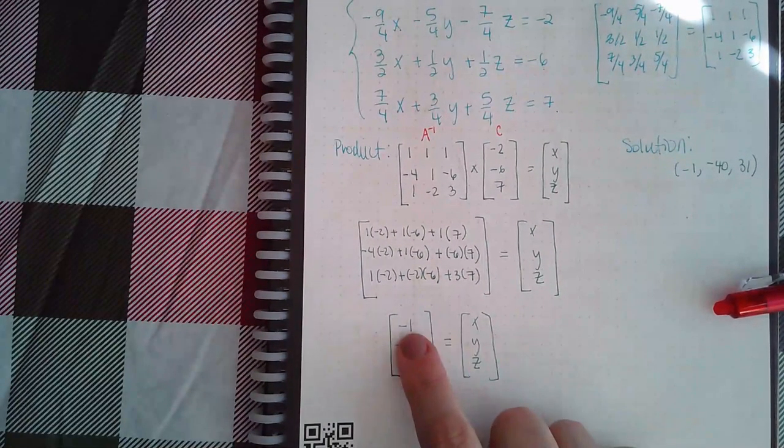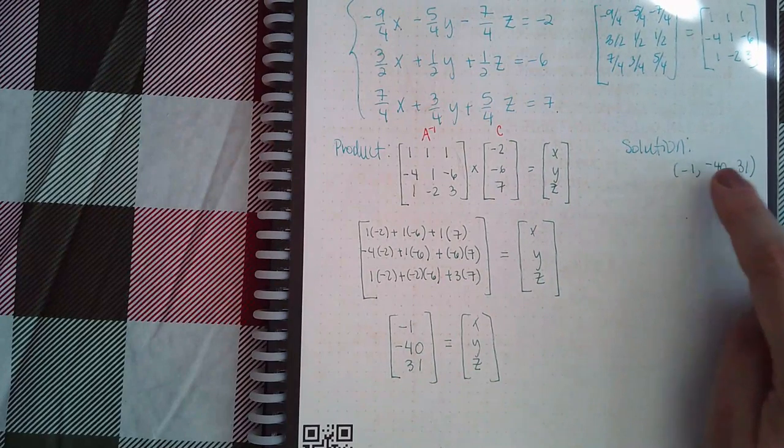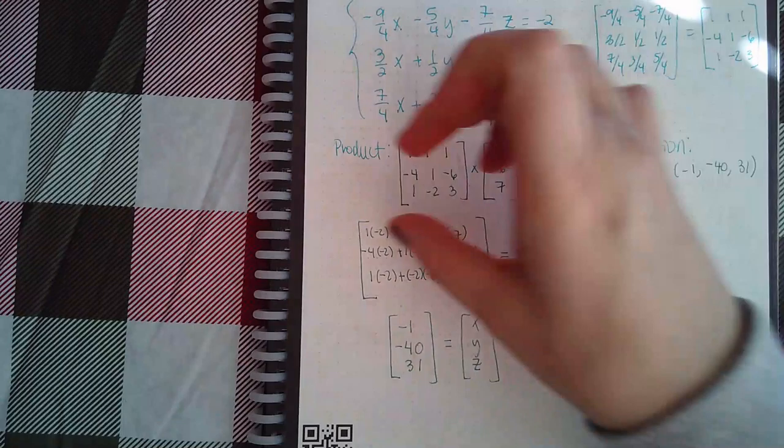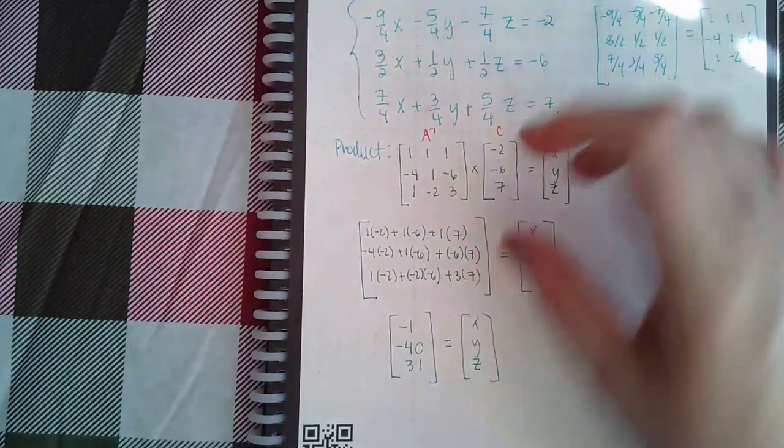Once I compute all of this, I got negative 1. Computed this one, I got negative 40, and computed this one, I got 31. So that means x equals negative 1, y equals negative 40, and z equals 31.